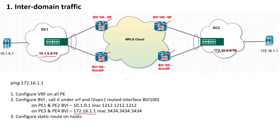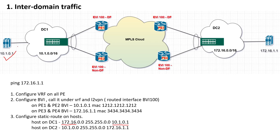Once you configure that, you need to configure static routes on the hosts. On the DC1 side host, we configure 172.16.0.0/16 pointing towards the BVI IP address. On the DC2 side host, we configure 10.1.0.0/16 pointing towards the BVI IP address, which is 172.16.1.1. In my blog I have provided all the configuration and verification commands — I will provide the link below. Once we configure everything, reachability will work between 10.1.0.1 and 172.16.1.1.